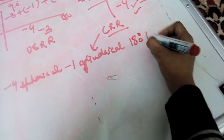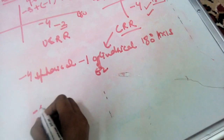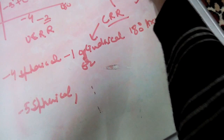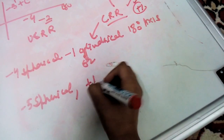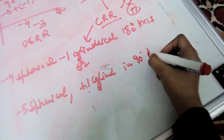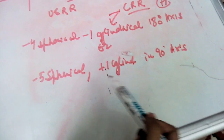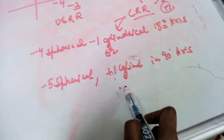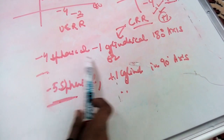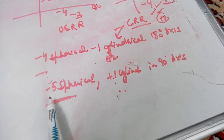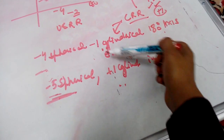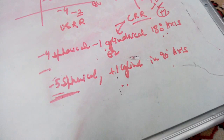Alternatively, some may prescribe minus five spherical. After giving minus five in both axes, we need to add plus one at 90 degrees, so: minus five spherical, plus one cylindrical axis 90. You can see that two different prescriptions can be written for the same retinoscopy reading — this is called transposition. The shortcut: take the algebraic sum of sphere and cylinder (minus four plus minus one equals minus five), change the sign of the cylinder (minus one becomes plus one), and swap the axis (180 becomes 90). That's all — thank you very much, bye.